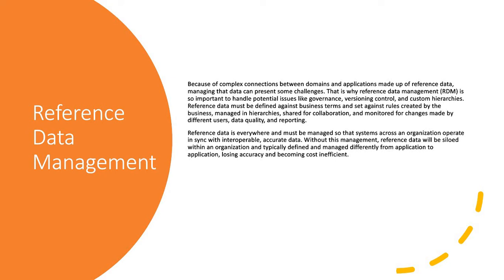Versioning control means you need to know, for example, if country code GB changed to UK in ISO 2 — from what point GB was active and till what point it retired, and from which date UK became active. Based on business requirements, you might also have different needs for custom hierarchies, which should be configurable within RDM, since different stakeholders may need to view different hierarchies for the same data.